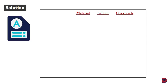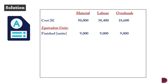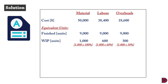We bring the three categories — material, labor, and overheads — because they were in different stages of completion. The cost for material was $50,000, labor $38,400, overheads $18,600. For the 9,000 completed units, all three categories show 9,000 equivalent units. For the 1,000 work in progress units: material was fully completed so 1,000 units stand; labor at 60% gives 600 equivalent units; overheads at 30% gives 300 equivalent units.